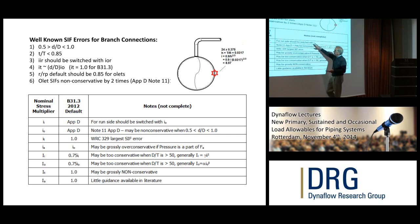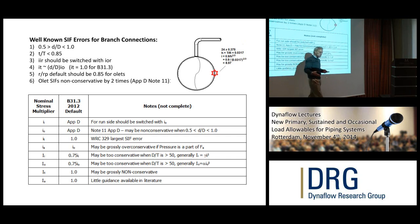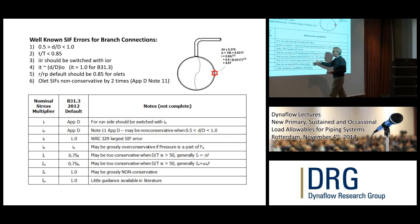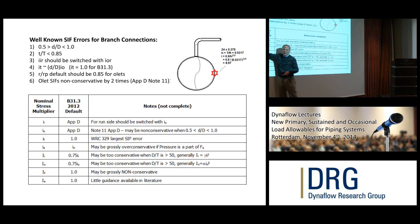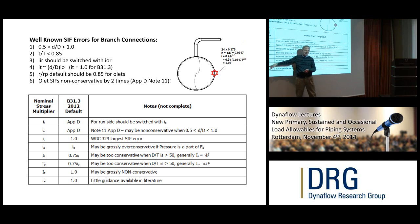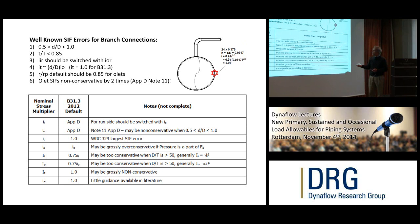There's a variety of other independent problems when evaluating the capital I factors. In 2010 the code changed the sustained stress indices to capitalized form, making most of them equal to 0.75i or 1. So if the little i's are in error, the big I's that depend on them are also in error. We're correcting the little i's, and what we'll talk about today is how we're correcting the big I's.